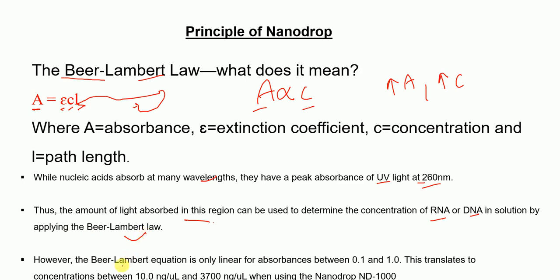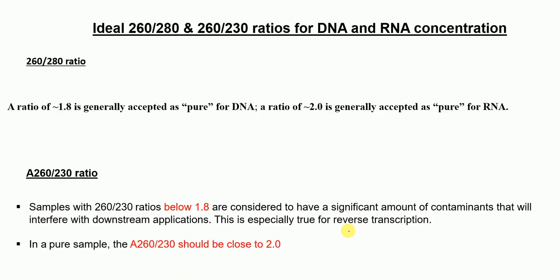However, the Beer-Lambert law equation is linear only for absorbances between 0.1 and 1, which means that only concentrations from 10 nanograms per microliter to 3700 nanograms per microliter can be accurately measured using nanodrop instrumentation.